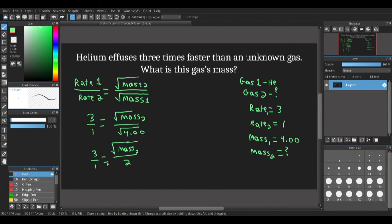Now, our next step is going to be to cross multiply. So we do 3 times 2, which is 6, and that equals 1 times the square root of mass₂, or just the square root of mass₂. And our final step to get mass₂ by itself is to square both sides.